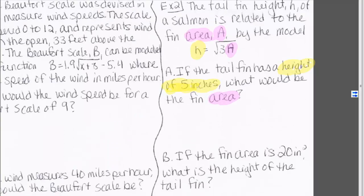Example 2. The tail fin height, h, of a salmon is related to the fin area, A, by the model h equals the square root of 3A.